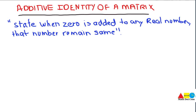For the time being, just forget about the word matrix. Recall the concept of the additive identity in case of real numbers. The additive identity is basically an identity property of addition that refers to the state when 0 is added to any real number, that number remains the same — meaning 0 is not affecting the value of that real number.